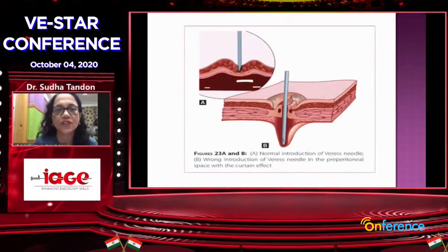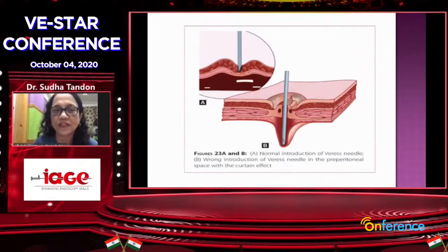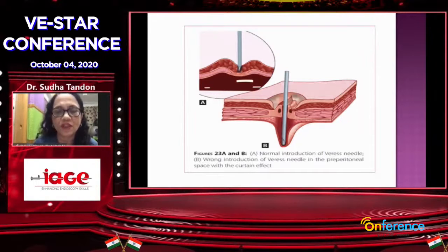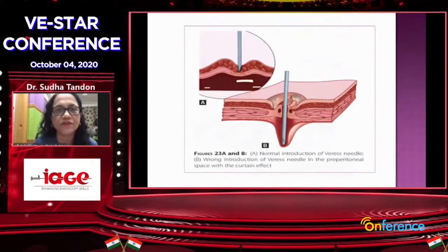As you can see in this figure, diagram A shows that it is perfect placement. Whereas in the second one, it is preperitoneal. If it happens preperitoneal, this hangs and causes a curtain effect, which can really make your laparoscopy very difficult.